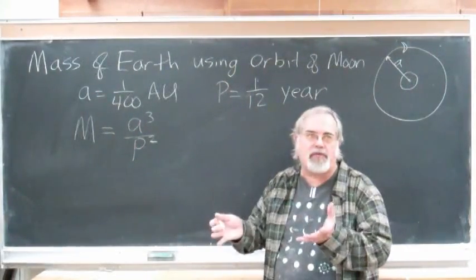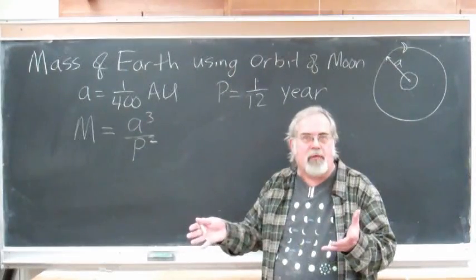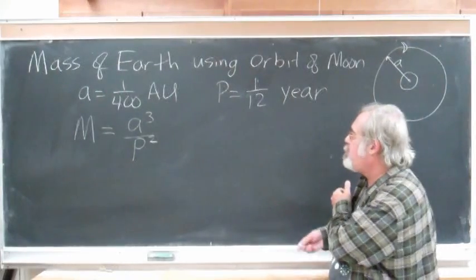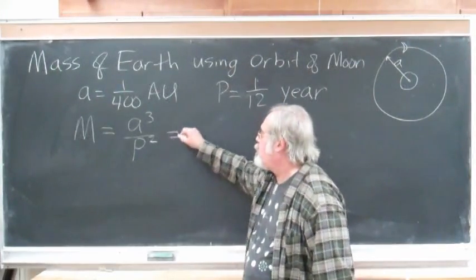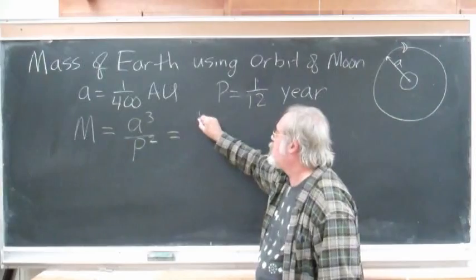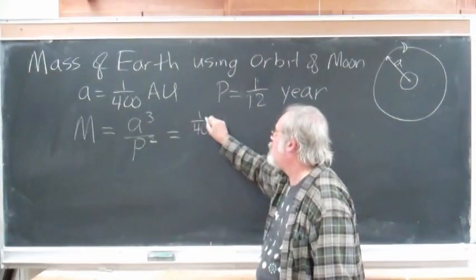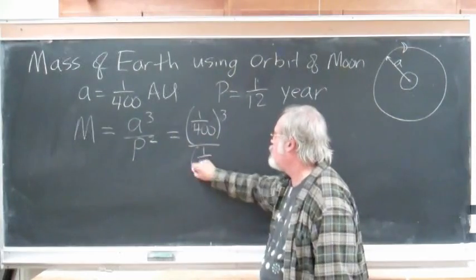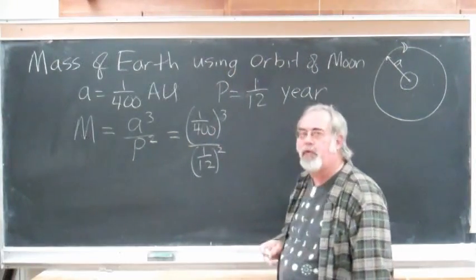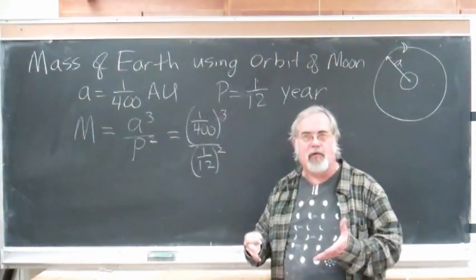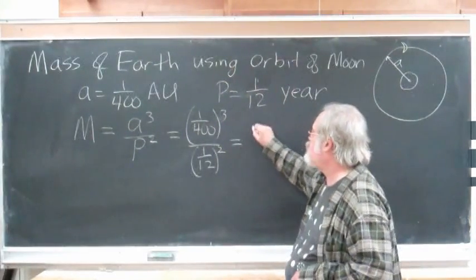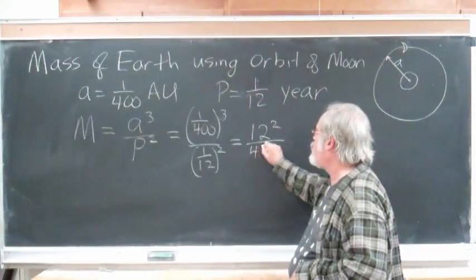So, in other words, if the mass is 1/4th the mass of the Sun, we'd come out with an answer of 0.25. Well, let's put our numbers in here and calculate. Well, that's 1/400 cubed divided by 1/12 squared. Now, hopefully you all remember that 1 over 1 over x is x. So, this is the same as 12 squared divided by 400 cubed.